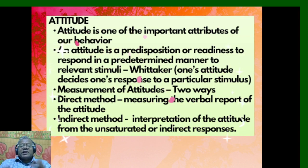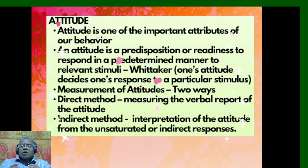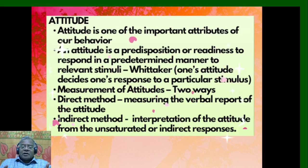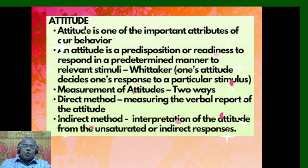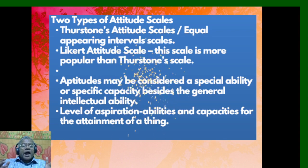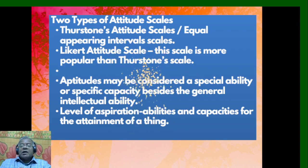Attitude is one of the important attributes of our behaviour. According to Vitaka, an attitude is a predisposition or readiness to respond in a predetermined manner to a relevant stimulus — one's attitude decides how one responds to a particular stimulus. We can measure attitudes in two ways: the direct method measures the verbal report of the attitude, while the indirect method interprets the attitude from unsolicited or indirect responses. There are two types of attitude scales: Thurston's attitude scale (also called equal appearing interval scale) and the Likert attitude scale, which is more popular than Thurston's.